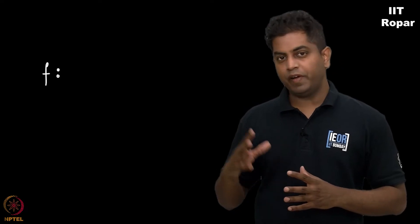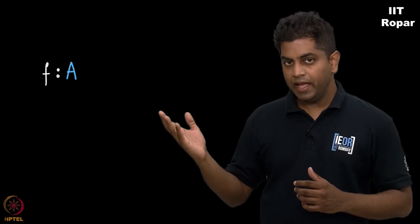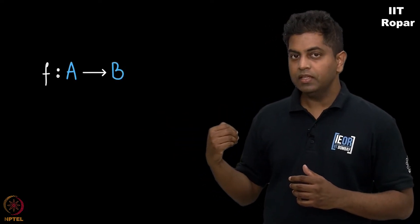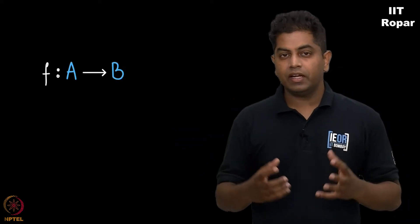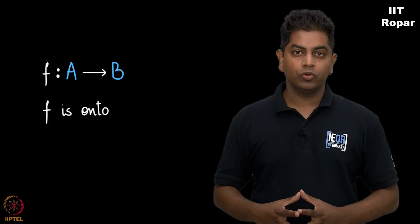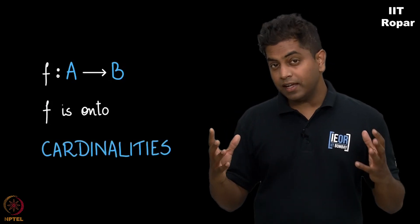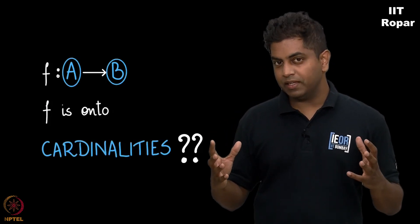What if there is a function f from a finite set A to a finite set B, and given that f is onto, what can you say about the cardinality of A and B?